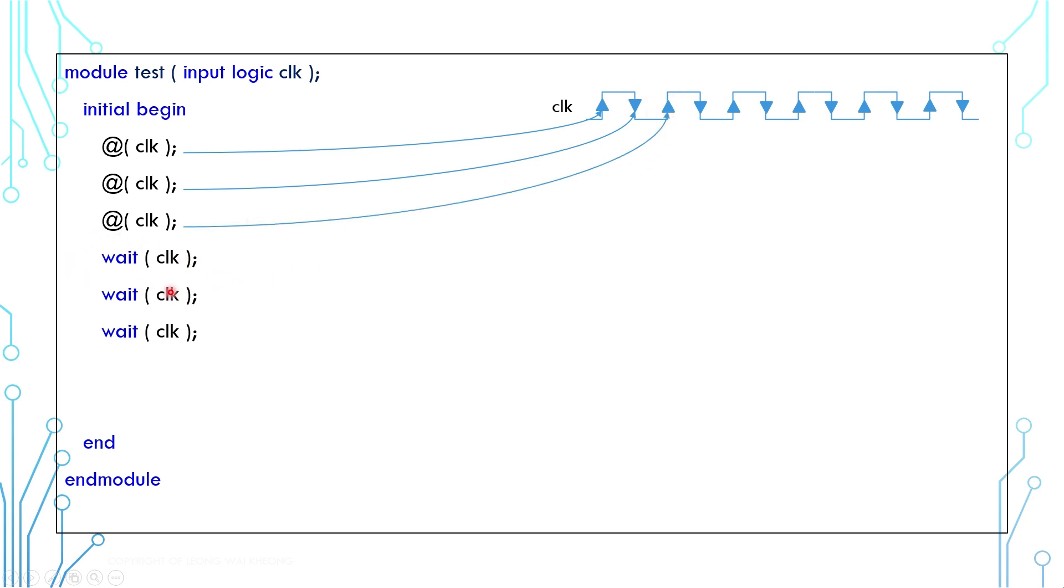Now we move to the wait statement. The wait statement waits for the clock to become 1, but the clock is already 1, so the wait is over. Interestingly, the second and the third wait statement are also the same, almost as if they are not having any effect.